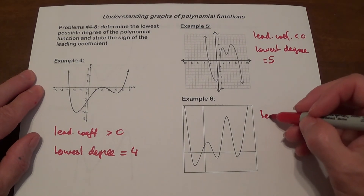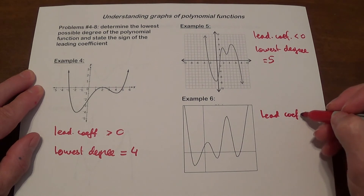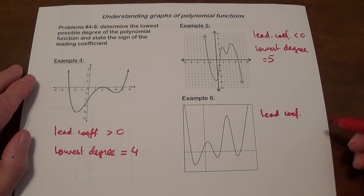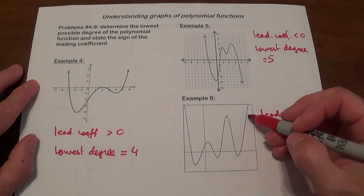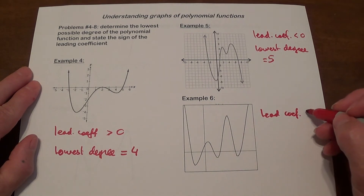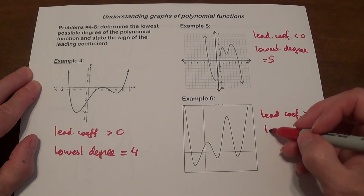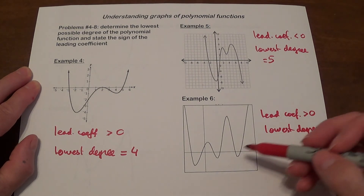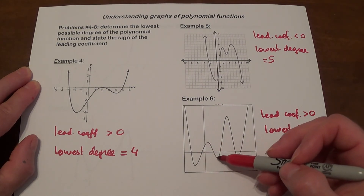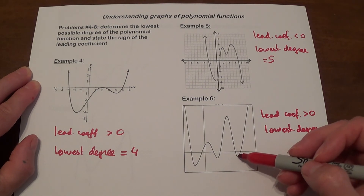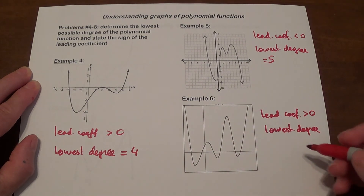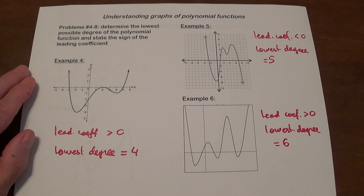With this next function, the right end goes up, so the leading coefficient is positive. For the lowest degree, let's count the turning points: 1, 2, 3, 4, 5. So 5 plus 1 is 6. Both ends go in the same direction, so the degree has to be even. 6 is even, so we write 6.